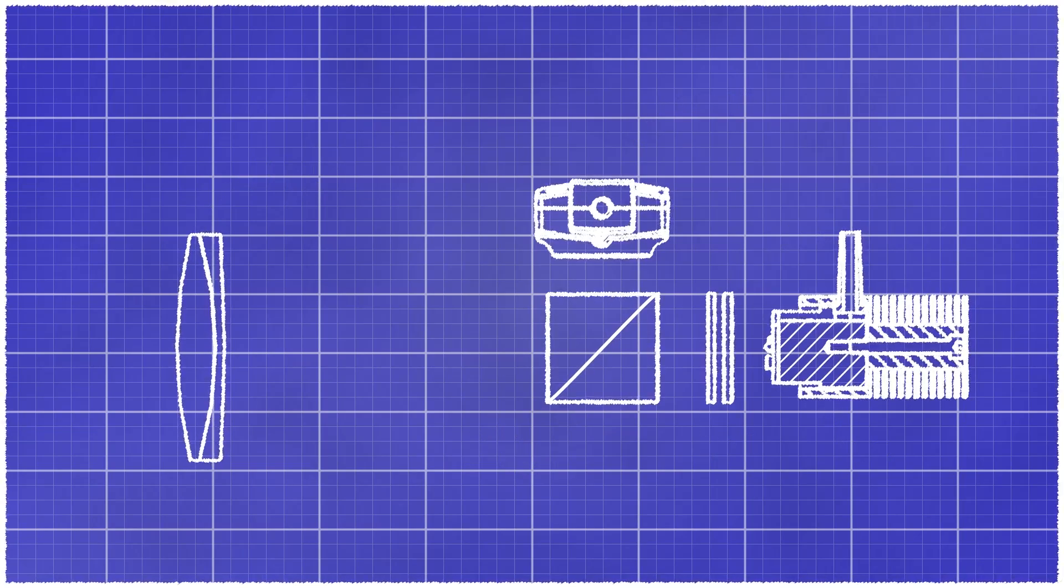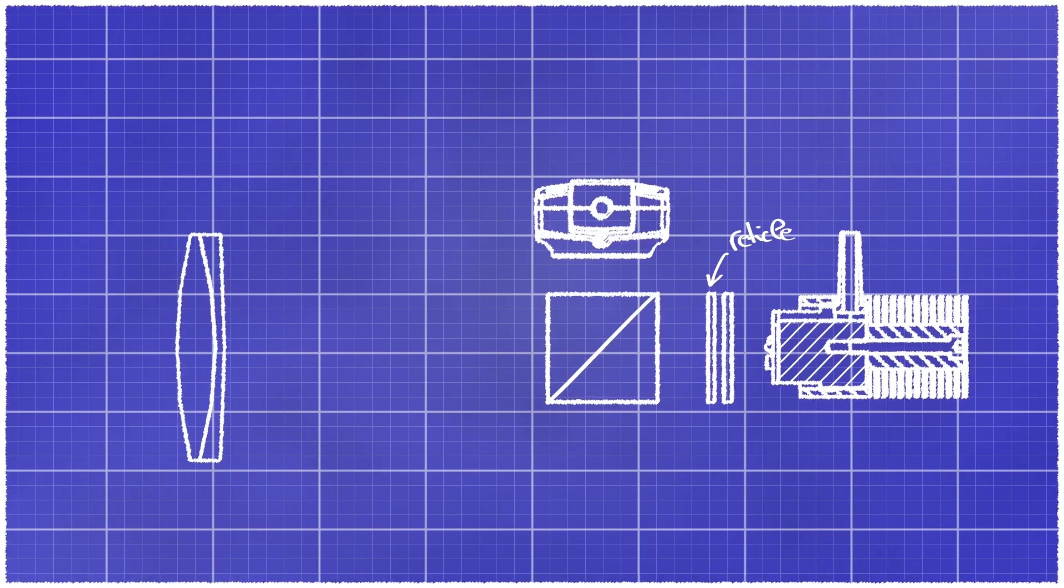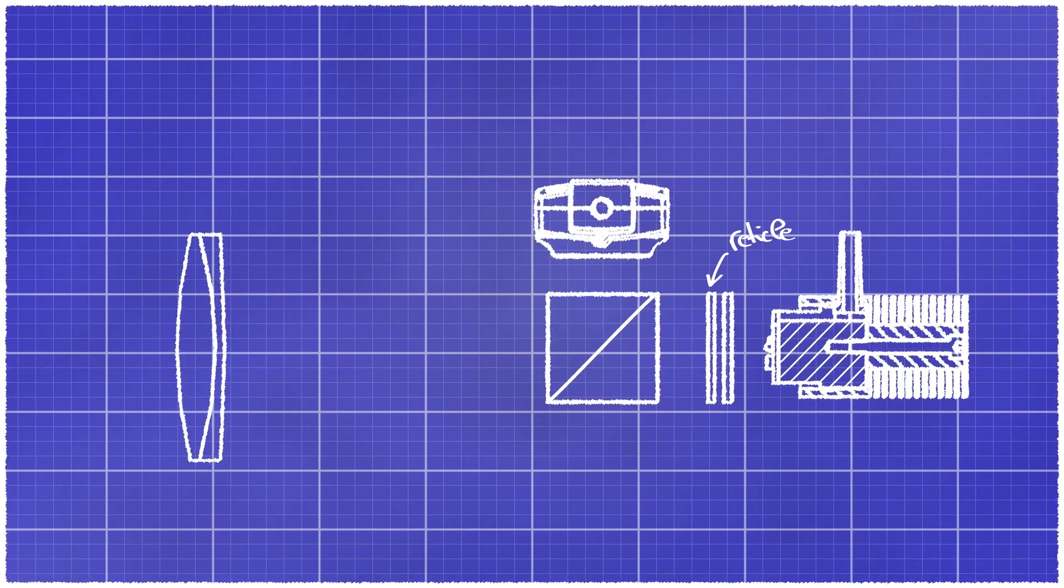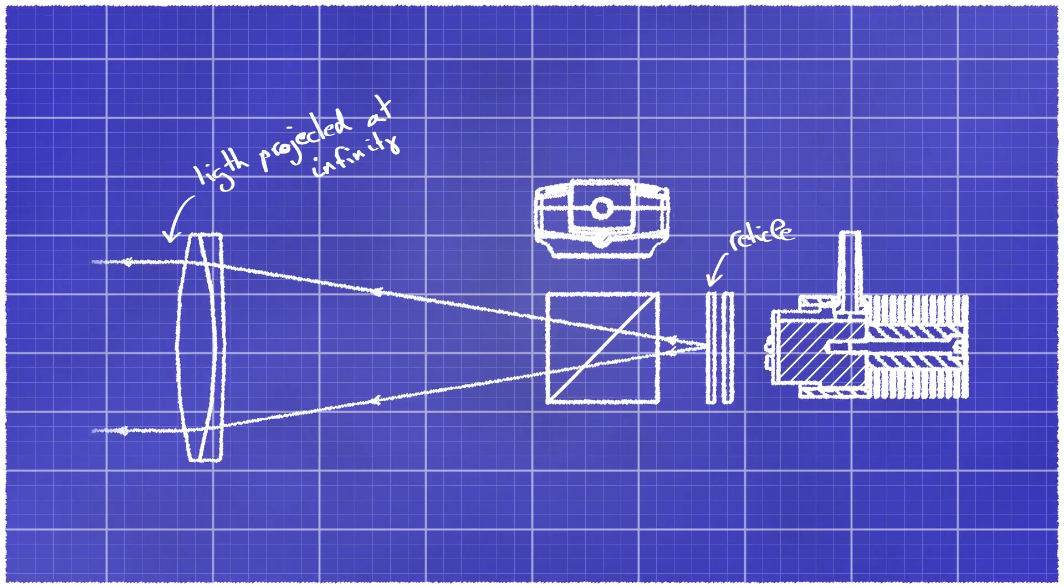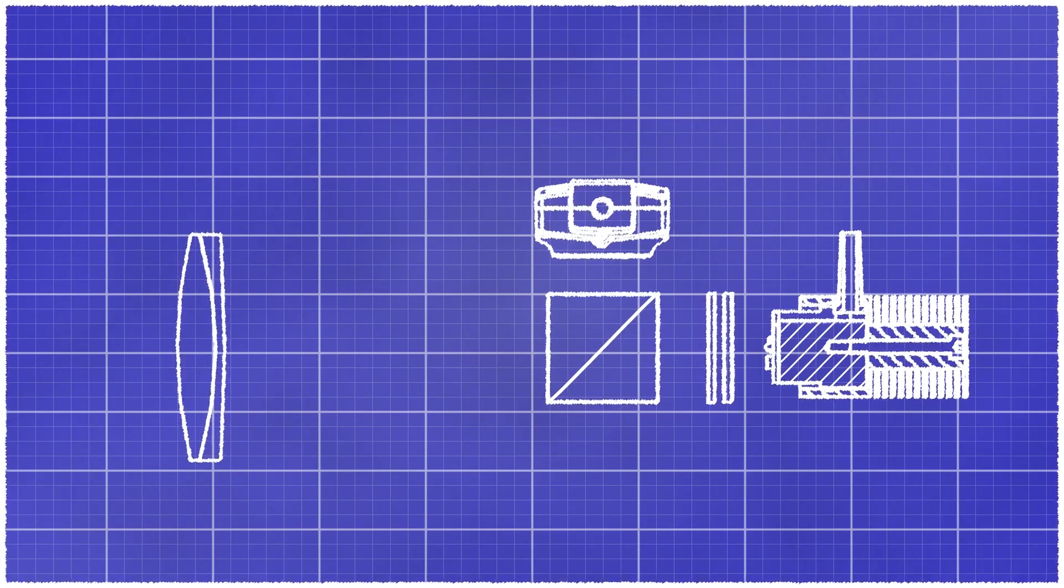Because the reticle target is placed at the back focal position of the collimating lens, it allows projecting an image of the reticle at infinity. In a similar way, light coming from infinity is imaged on the camera.